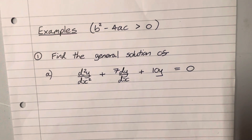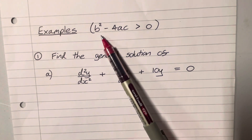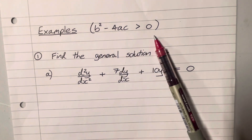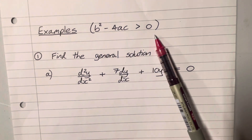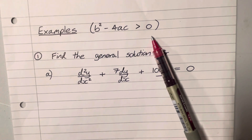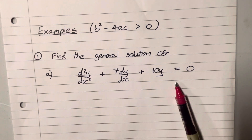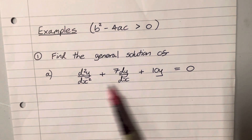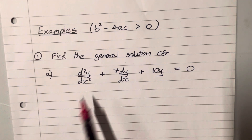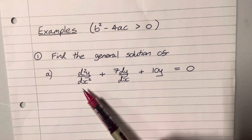Now we've done the general theory, let's put that into practice with some examples. In this video we're going to focus on situations where b squared minus 4ac is positive — that is, there are two distinct real solutions to the auxiliary equation. Example number one: find the general solution of this second order equation.